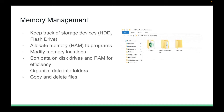The next role of an operating system is memory management. This involves keeping track of storage devices, allocating the appropriate amount of RAM to programs for optimal performance, modifying memory locations, sorting data, having the optimal configuration of data on RAM or disk drives, and organizing data into folders and copying and deleting files.